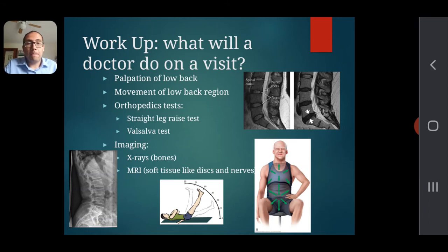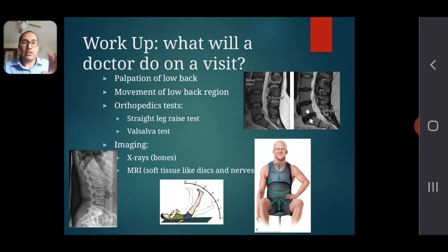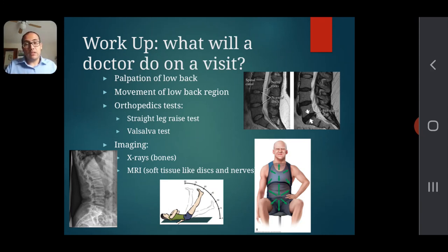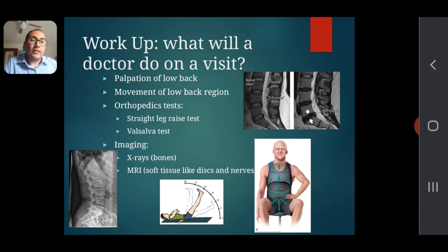If you decide to go to the doctor, every doctor is a little different, but for typical low back pain they'll take your history, palpate your back, move it in different directions, and do orthopedic tests to identify where the pain is coming from. They may also order imaging: an X-ray checks the bones, as you can see in the lower left, while an MRI of soft tissue — shown in the upper right — costs more but provides much more information than a simple X-ray.